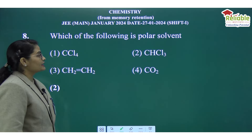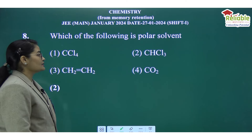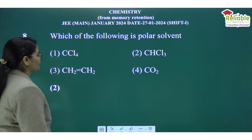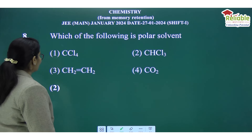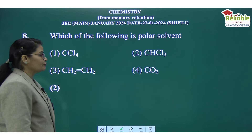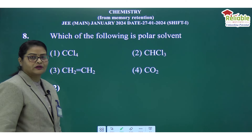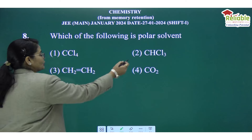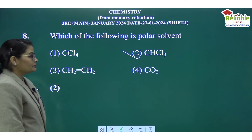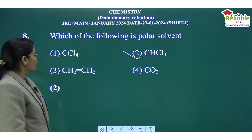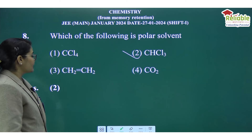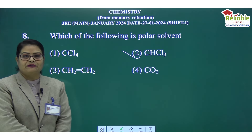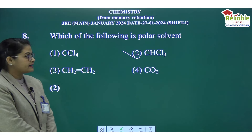Which of the following is a polar solvent? This question is related to polarity. The options are: CCl4, chloroform, CH2CH2 (ethene), and CO2. The correct answer is chloroform — chloroform is a polar solvent. CCl4 has dipole moment zero, ethene has dipole moment zero, and CO2 also has dipole moment zero.